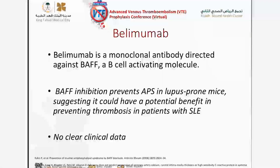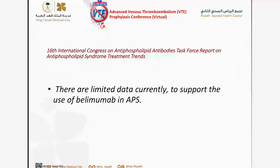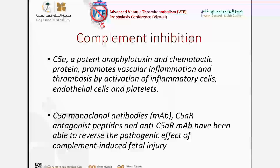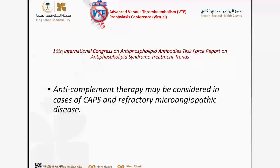Regarding belimumab — the B-cell depleting agent — there is no clear data for its use in SLE with thrombotic events. There are only two case reports, both about non-criteria APS manifestations, so there is no data to support using belimumab in such conditions. Complement inhibition plays a major role in triggering thrombosis in APS — eculizumab has been approved and used in patients with CAPS. We might consider it in CAPS with refractory microangiopathic disease.